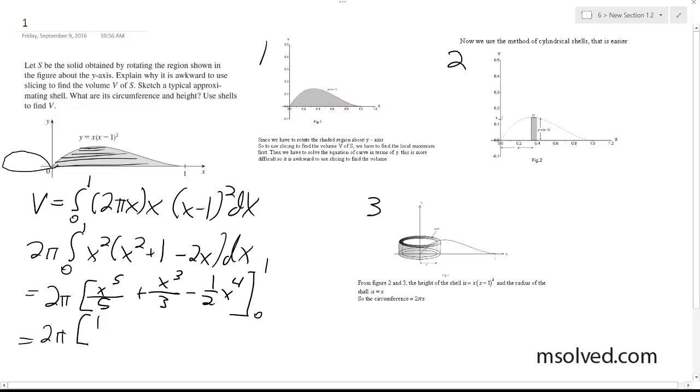Multiplying this out, we get 2π times (1/5 + 1/3 - 1/2) which equals 2π/30, which simplifies down to π/15. That's it.